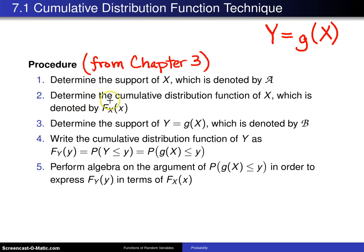Step two is to determine the cumulative distribution function of the random variable x, which is denoted by capital F sub x of x. The reason we need this subscript is there are two random variables in the picture now: x and y. There's going to be two different CDFs in the picture, namely this one, which is the CDF of x, and this one right here, which is the CDF of y. That's why you have the subscript.